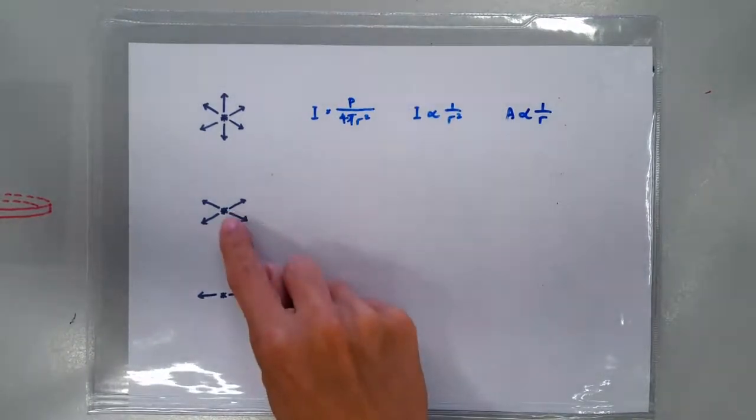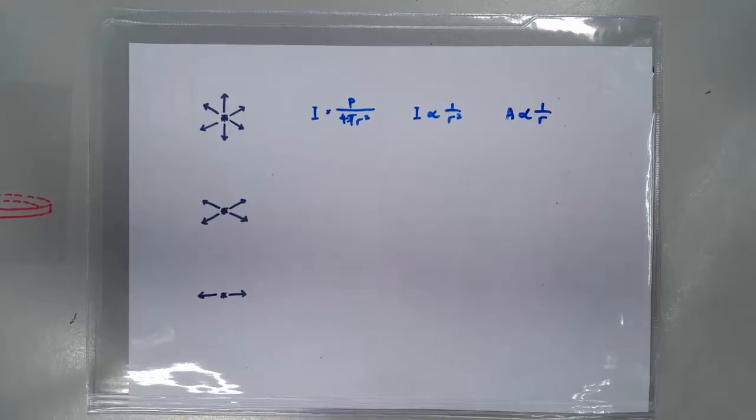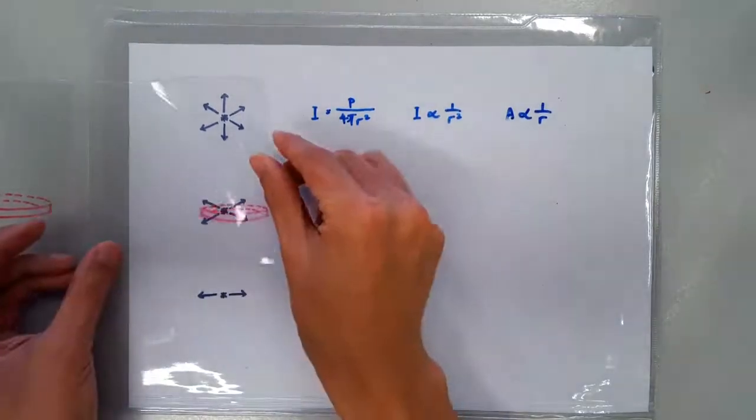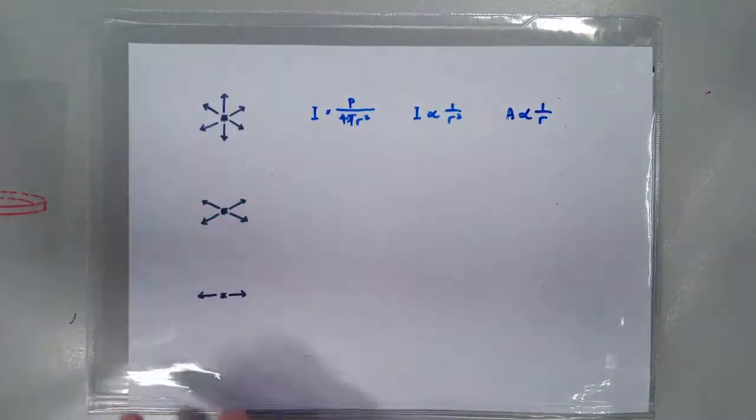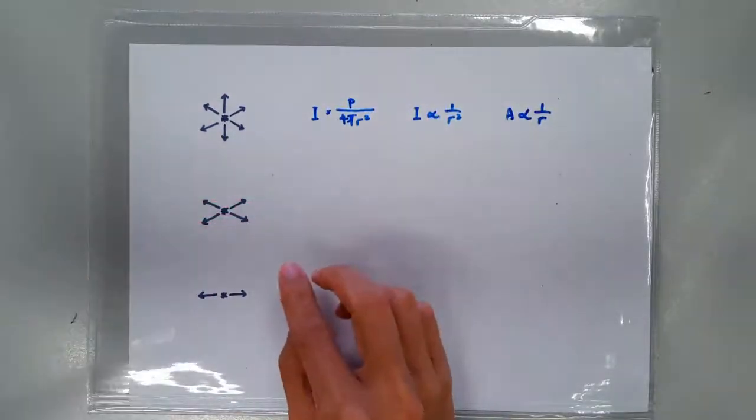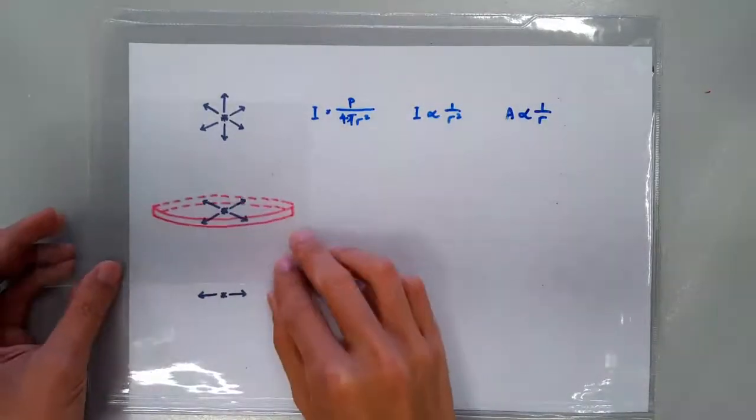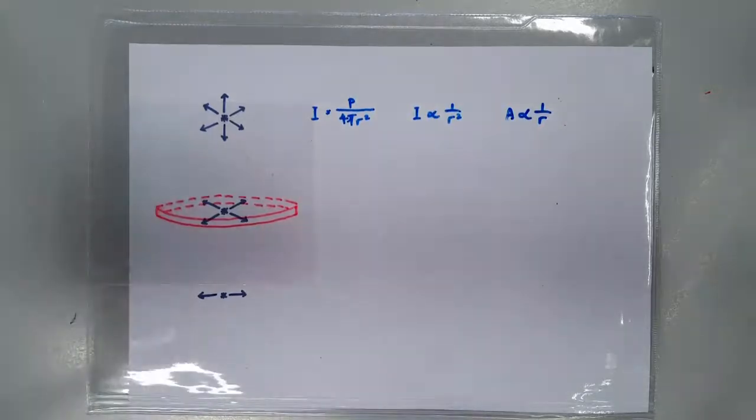So if the wave source transmits power at the rate of p, then this power p will be spread thinner and thinner across a larger and larger cylindrical surface as the wave propagates.